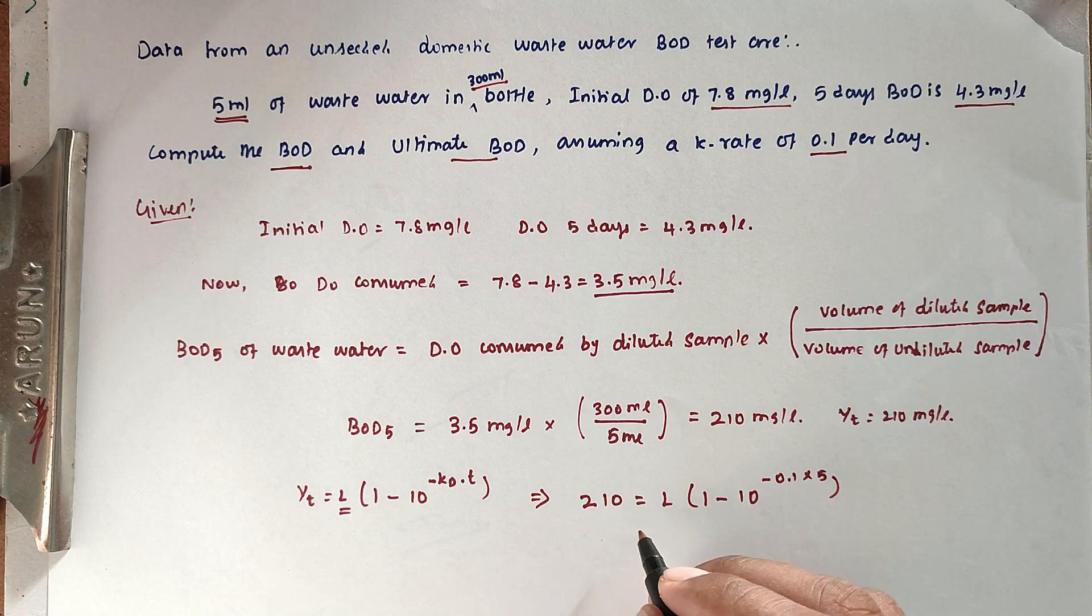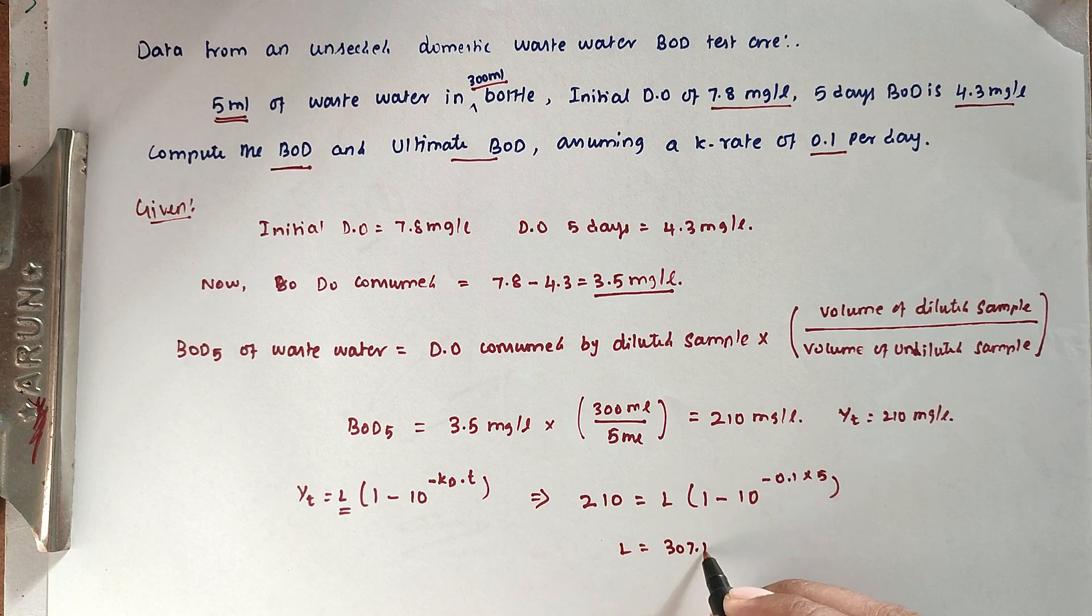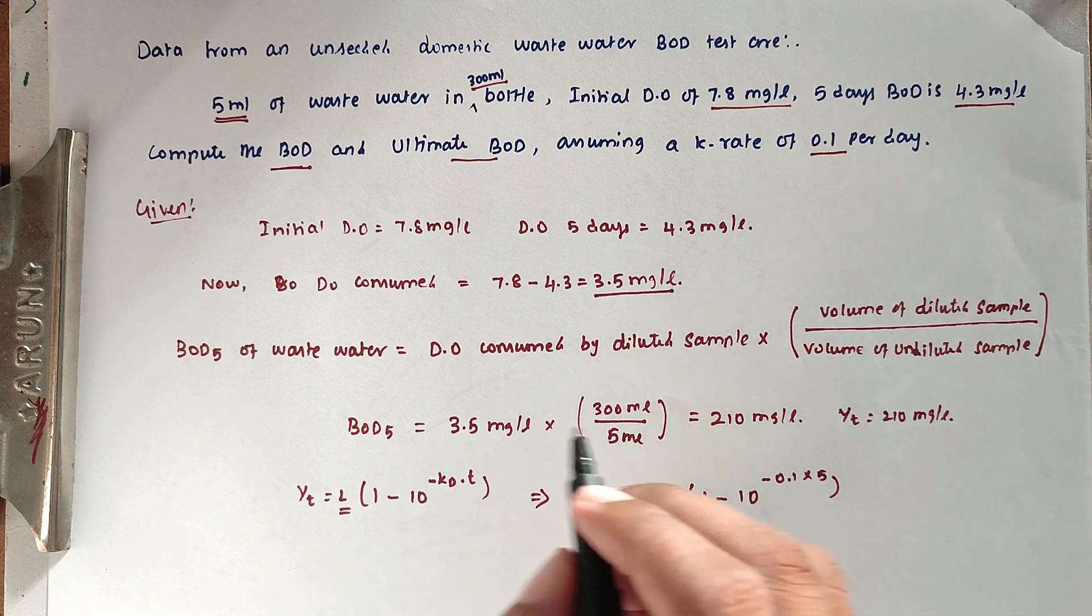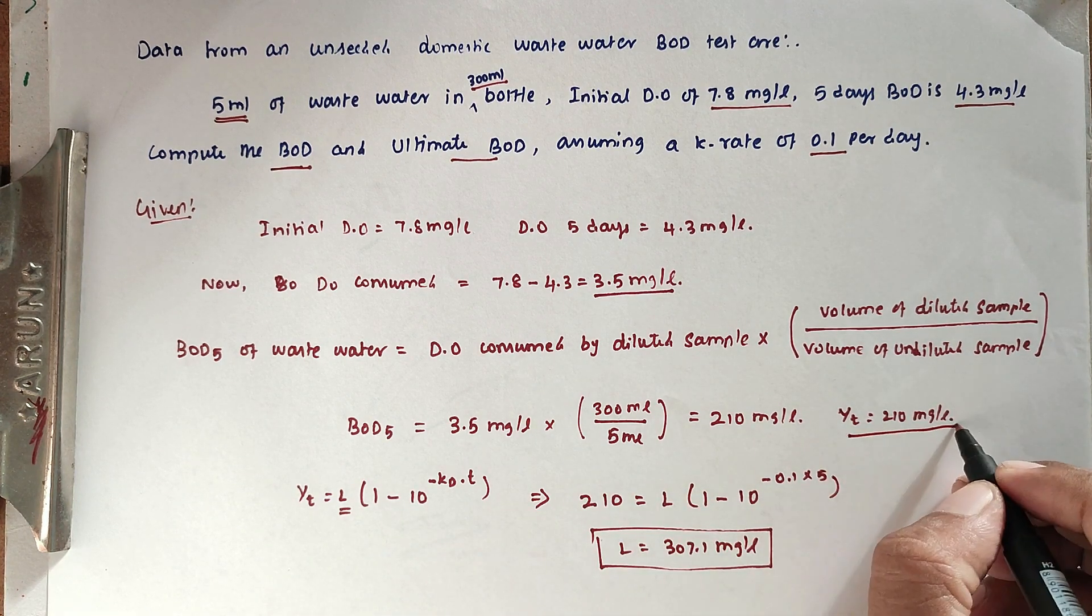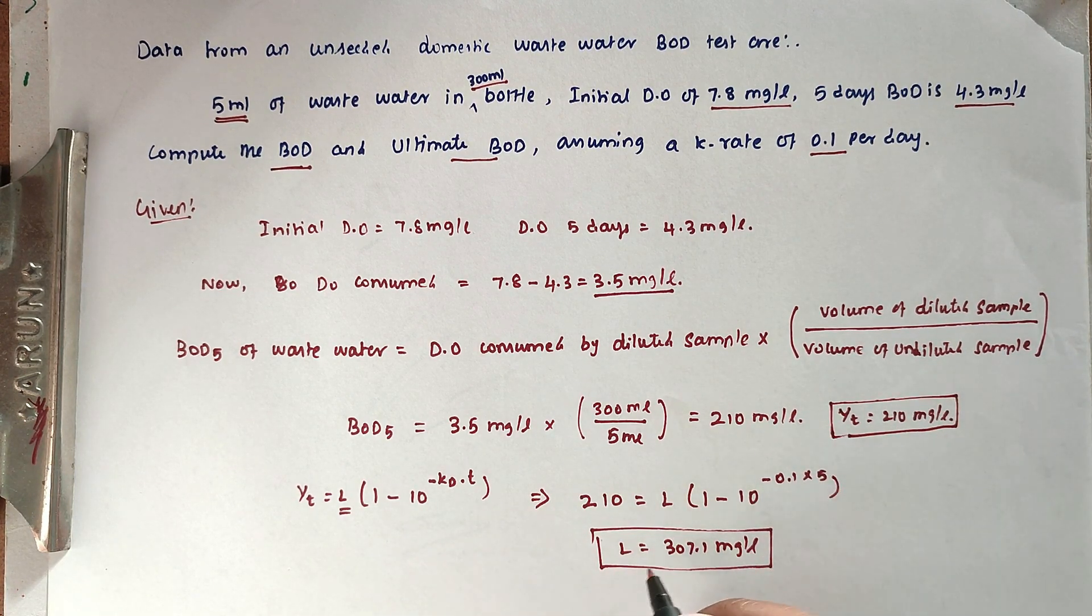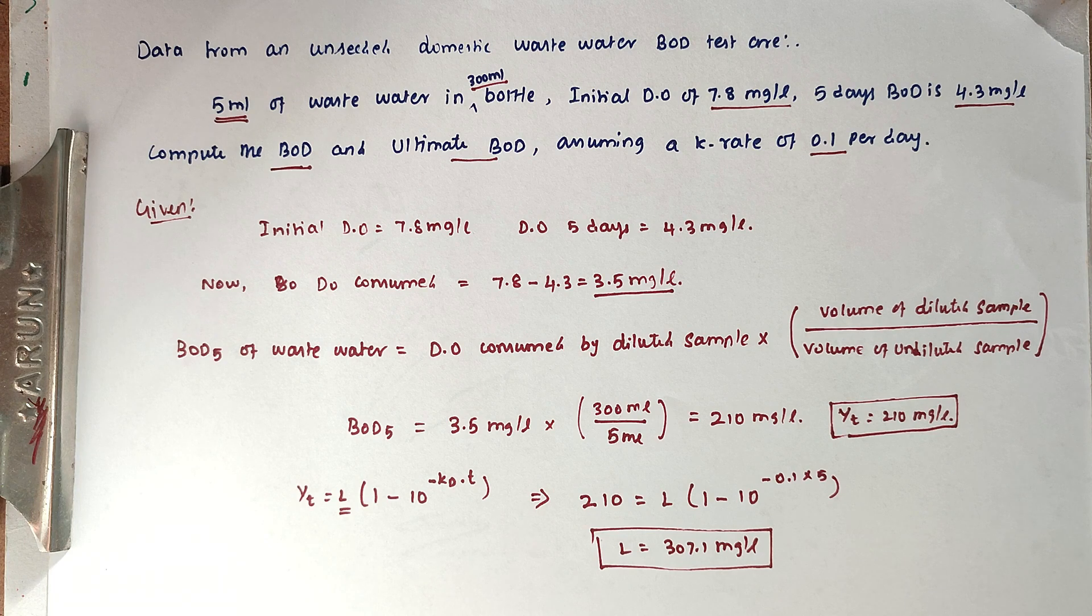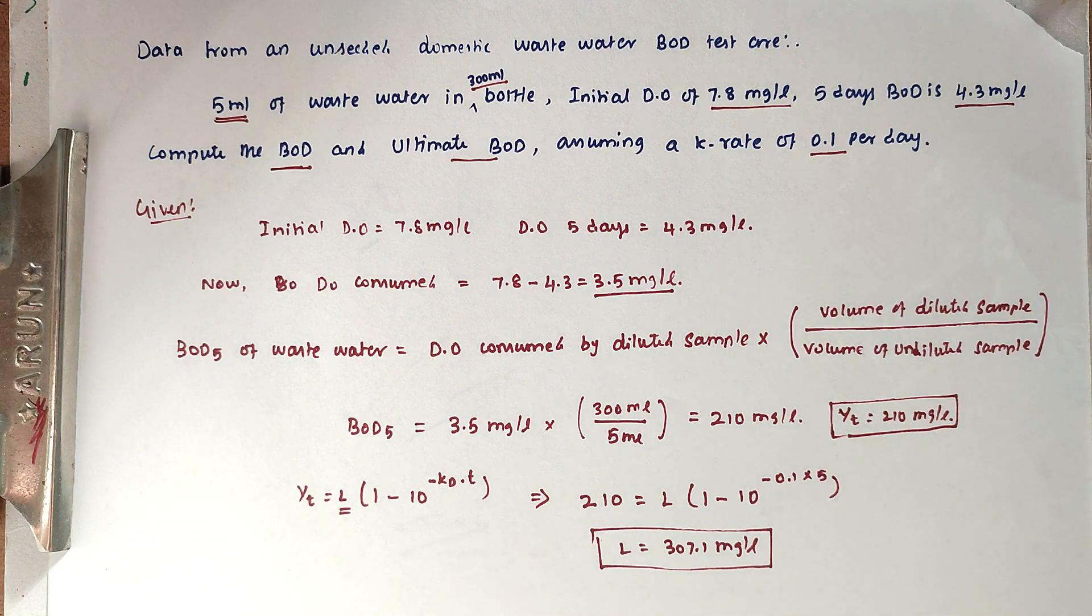This is the ultimate BOD. So the BOD5 value is 210 mg/L, and the ultimate BOD is 307.1 mg/L. This is the method to solve this problem. We'll see you in the next video, thank you.